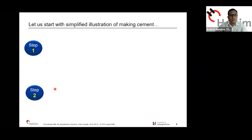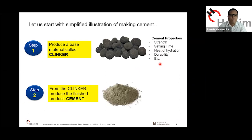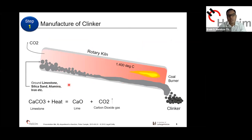The first step is producing a material called clinker. From clinker, all the cement properties that we know — strength, setting time, heat of hydration, durability, and many more — originate. From clinker, we produce cement. It looks simple, but it's really complicated in the field. In step one, we put limestone, silica, and other raw materials inside a kiln operating at 1,400 degrees Celsius. Because limestone is the dominant raw material — that's calcium carbonate — when we heat it, it breaks down into lime and carbon dioxide gas.